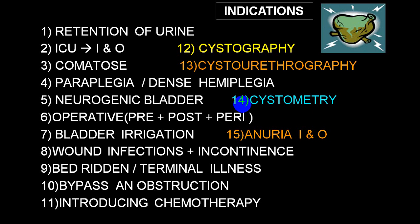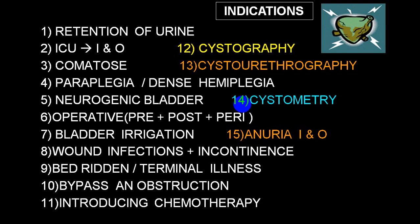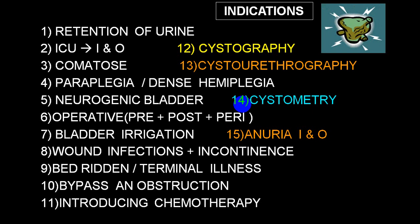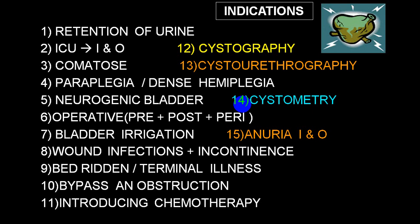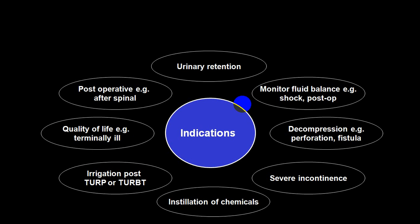To bypass obstruction, catheterization may be needed — usually suprapubic — in cases of urethral stricture or urethral problems. It is also done to deliver chemotherapy for bladder or prostatic malignancy, and during diagnostic procedures such as cystography, cystourethrography, cystometry, and ascending pyelography. In cases of anuria, catheterization is very useful for measuring input and output.